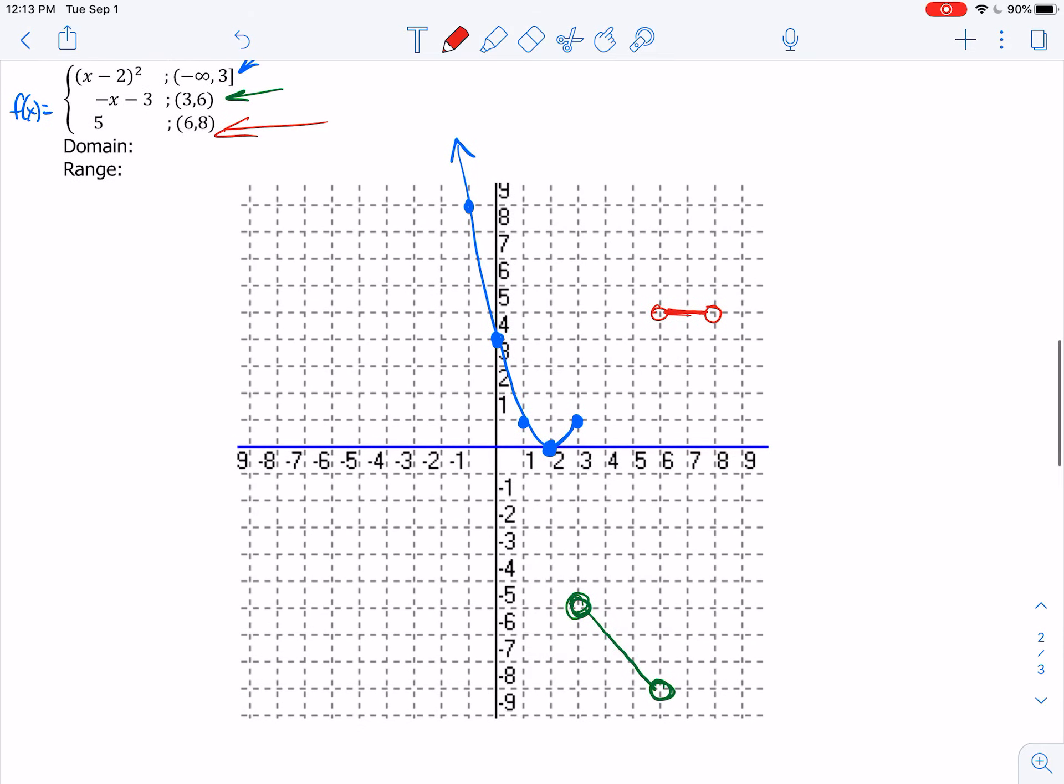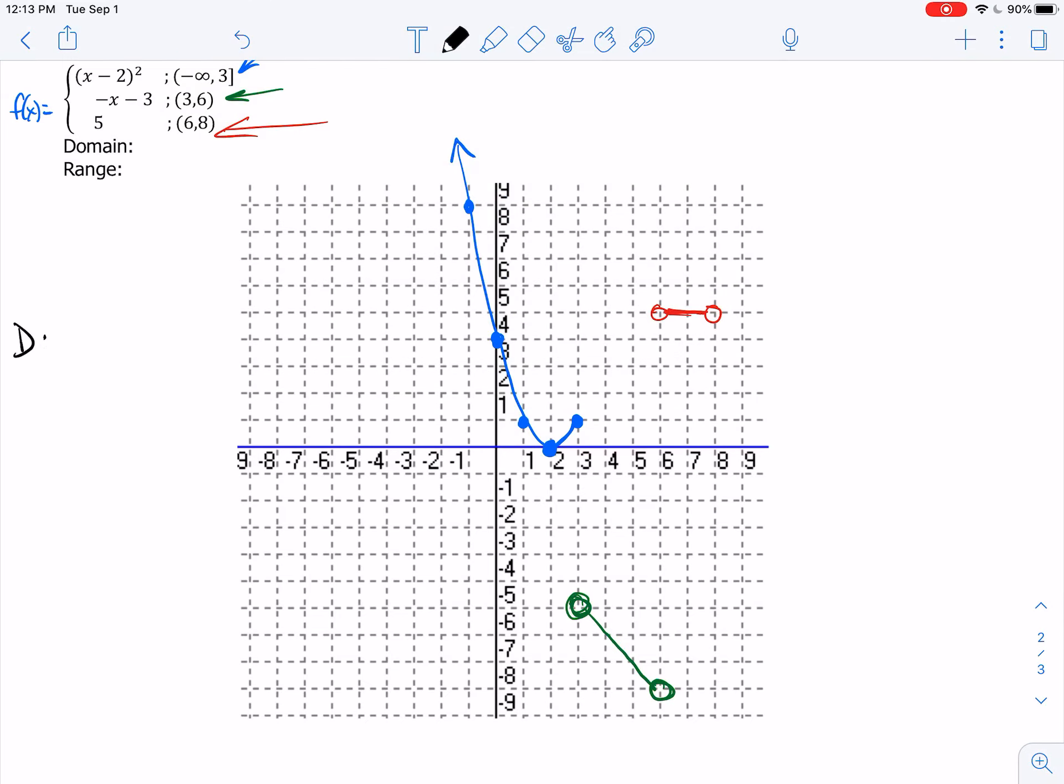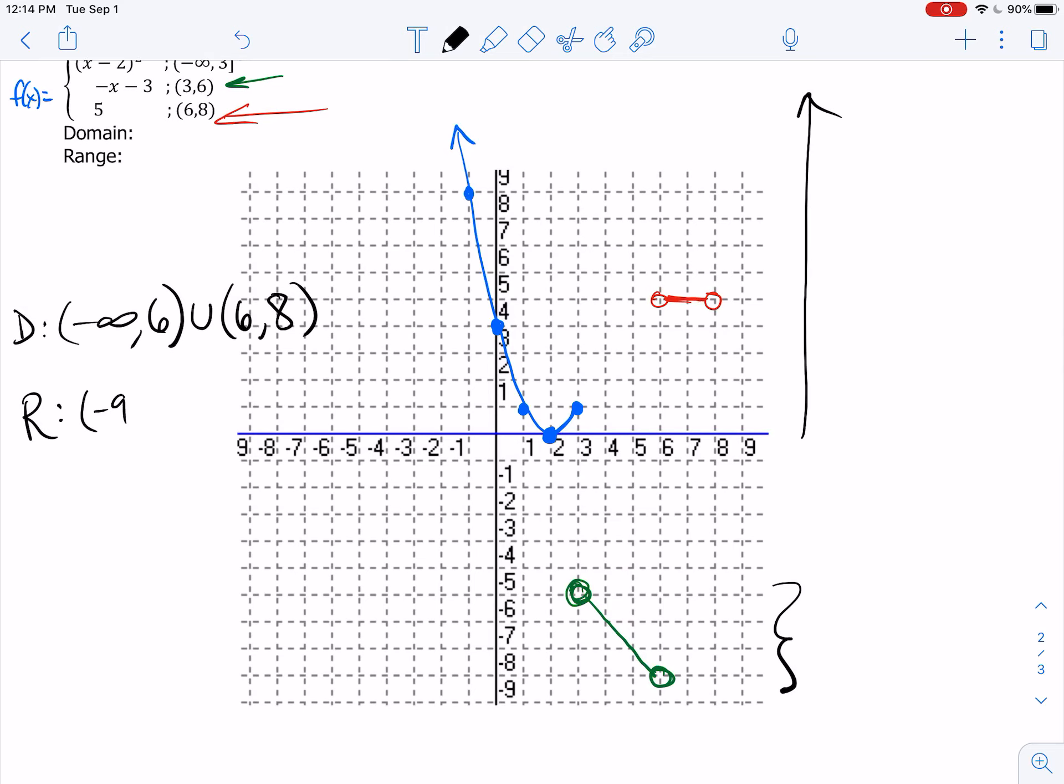So the domain, well, the domain goes from negative infinity to 3. It's defined at 3. And then we keep going until we get to 6. So I'm going to indicate that it just goes to 6, but it does not include 6. Then we pick it up again and we go from 6 to 8. Our range, I have this little piece down here that I'm looking at. And then I have this piece that goes up to positive infinity. So my range is going to go from negative 9 to negative 6. So my range goes from negative 9 to negative 6. Then we pick it up again and we go, we do include 0. We go from 0 to infinity. And that's our domain and range for that problem.